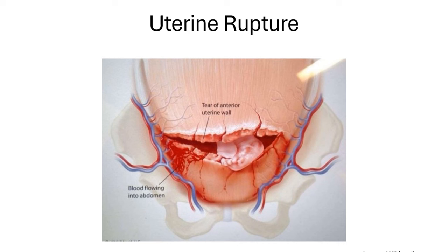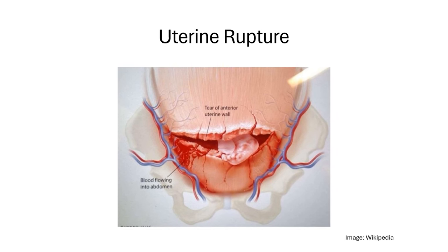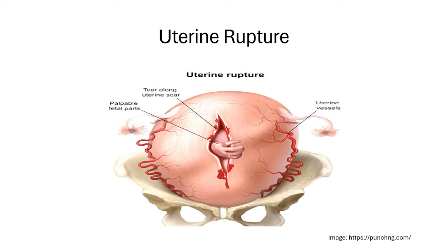In rupture of the uterus, as the name says, the uterus is ruptured. The most common cause is an old scar in the uterus — for example, from a previous cesarean section — which weakens the uterine wall. In a subsequent pregnancy this weakening can lead to rupture. The tear can be transverse, following a transverse cesarean scar, and you can see the baby's feet coming out through the ruptured wall. A vertical incision from a previous pregnancy can similarly weaken and rupture along the scar line.